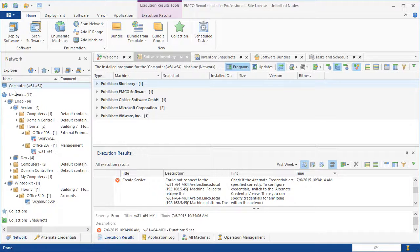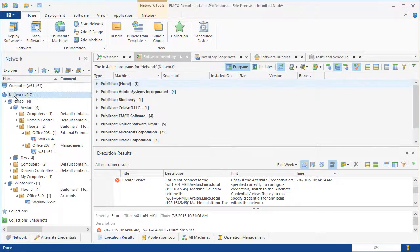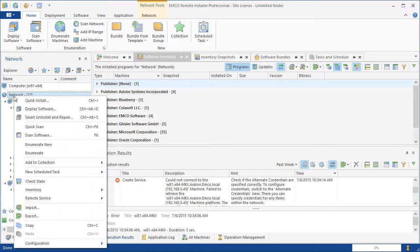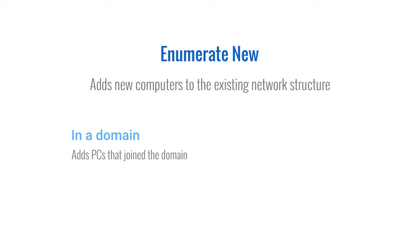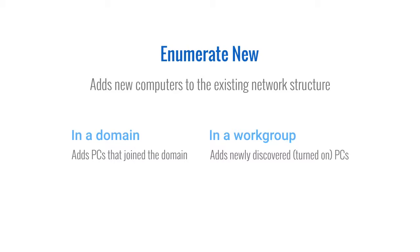You can update the network tree using two operations. The enumerate new operation keeps the network tree structure and just adds new computers. If you execute it for a domain, it adds computers that joined the domain. If you execute it for a workgroup, it adds newly discovered computers — for example, those that were turned off during the previous enumeration.